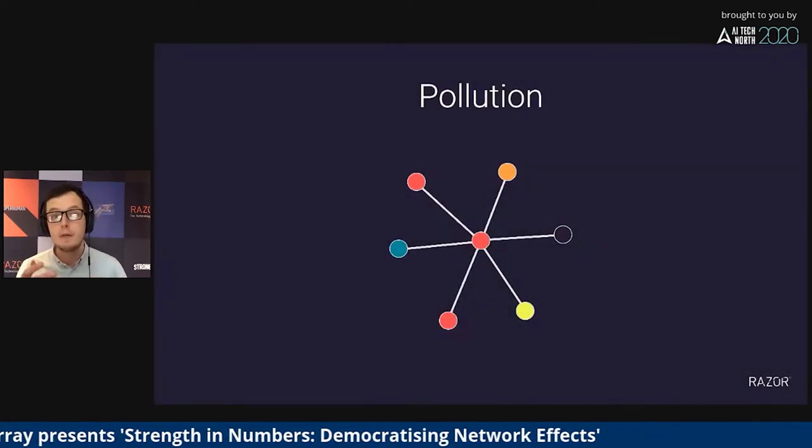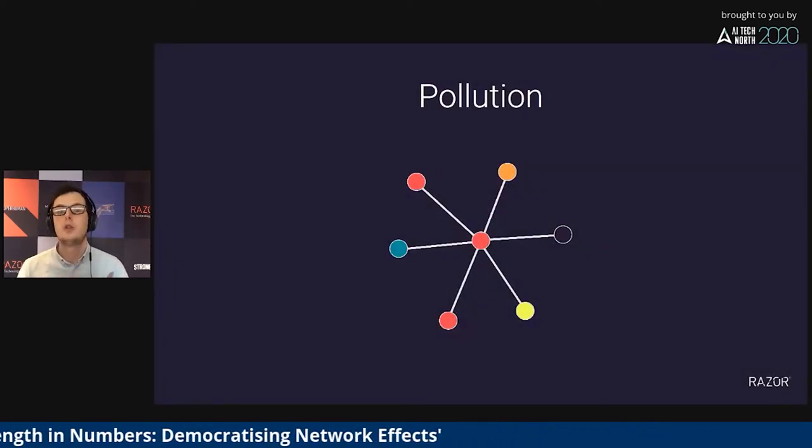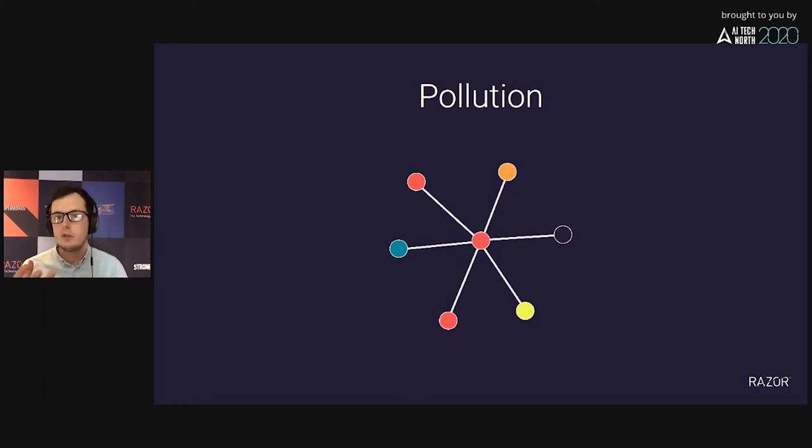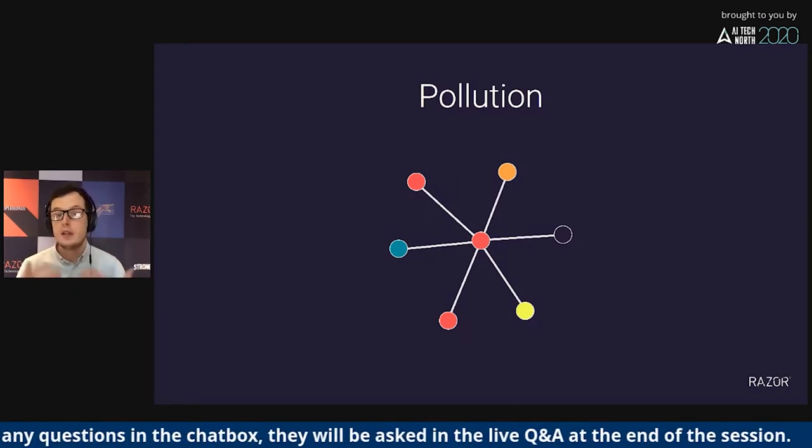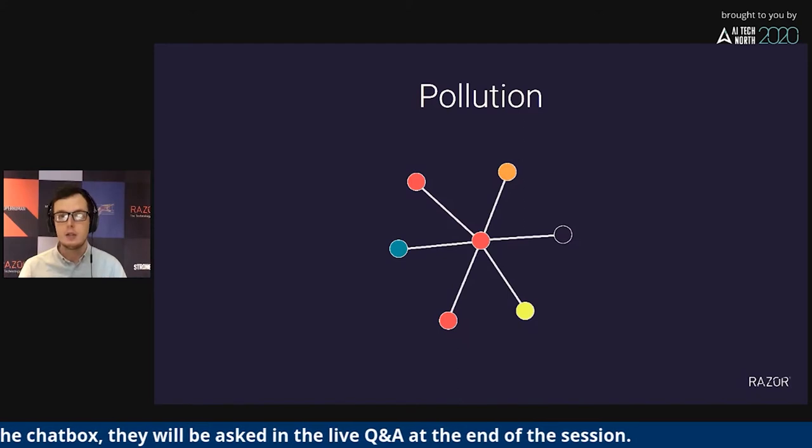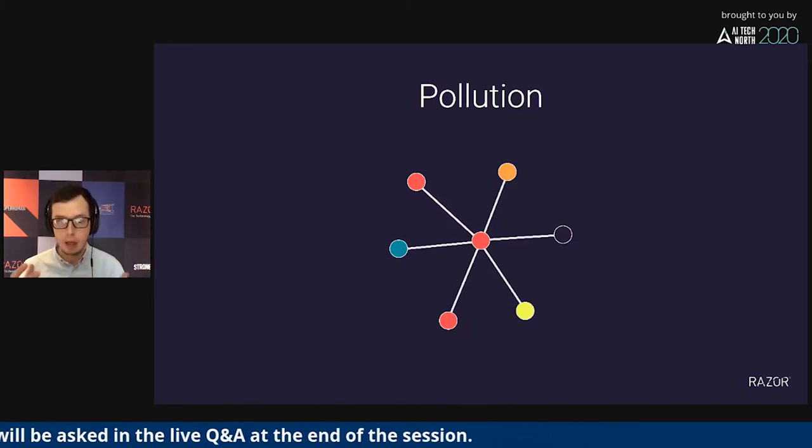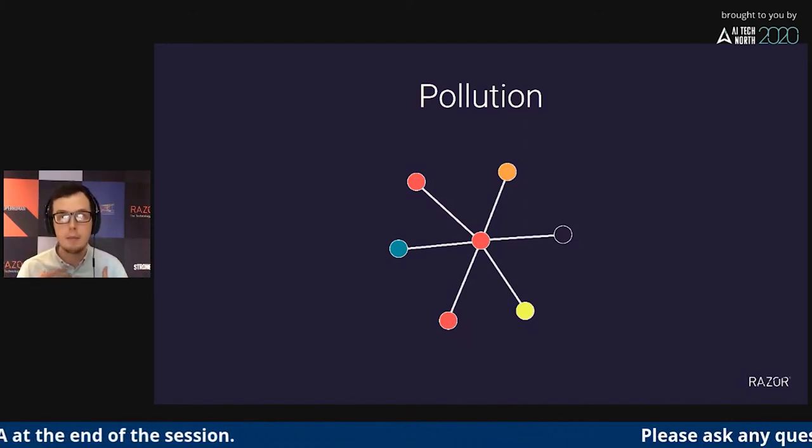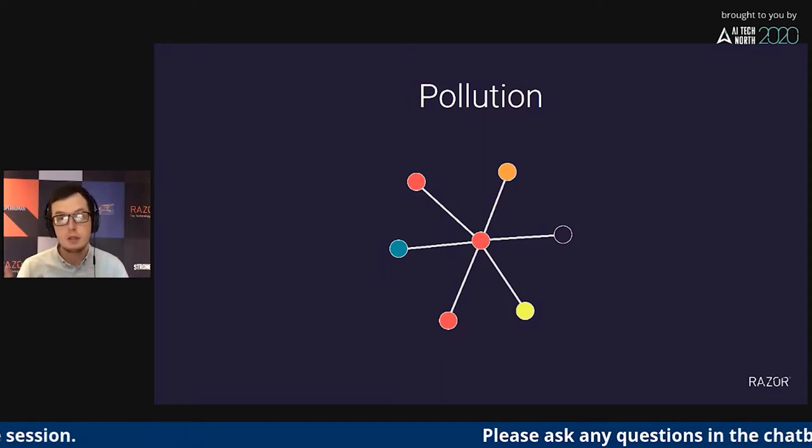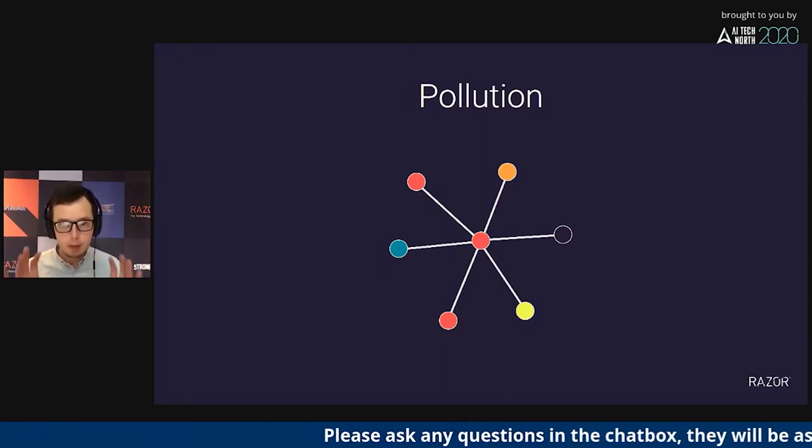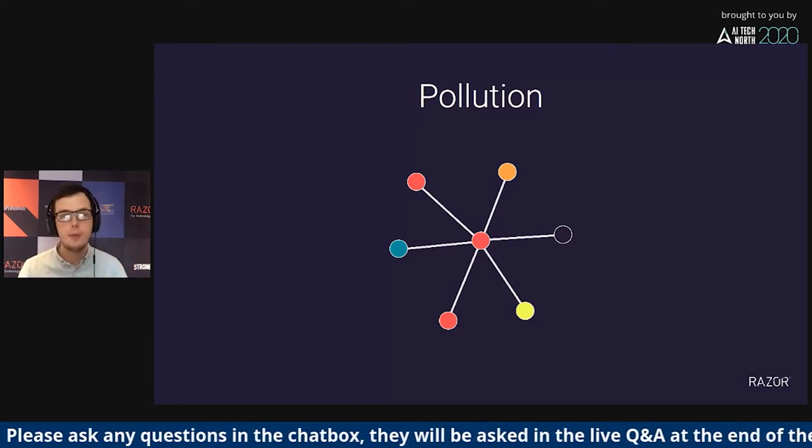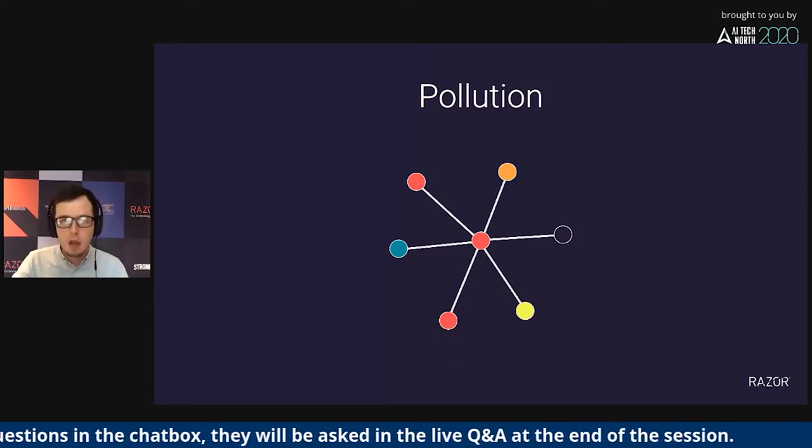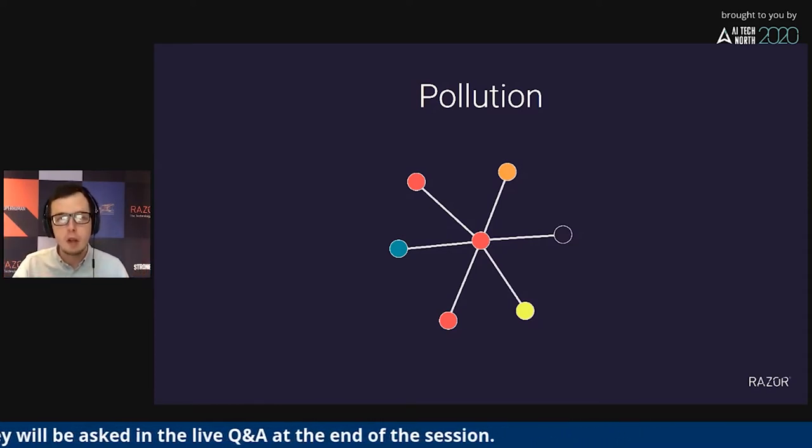The second one is pollution. This is when a network has grown too large with nodes, and they aren't all of interest to you, and therefore your experience is polluted by the output from these nodes. The best example of this is your nan joining Facebook, and she starts to share memes that you don't find very funny. Obviously, if my nan's watching this, that doesn't include me, but it gives you an idea of what this effect is. That was a very whistle-stop tour of network effects. It's probably a lecture in and of itself, but I want to make sure we have this shared understanding before moving on.